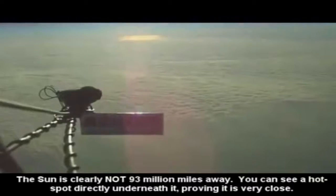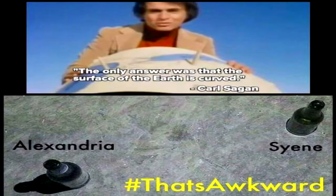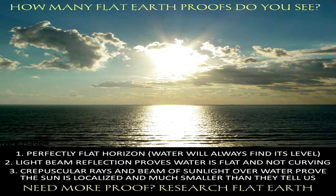Therefore, if globe believers wish to be honest, they must admit it is their faulty assumption that only a distant sun with parallel rays could produce such results, which has led to their faulty conclusion of a curved earth. Because flat earthers have always maintained that the sun was local, and the very existence of crepuscular rays renders the entire experiment invalid.